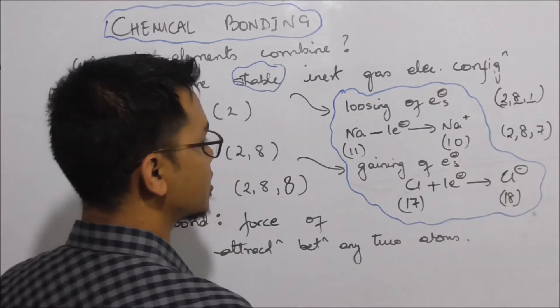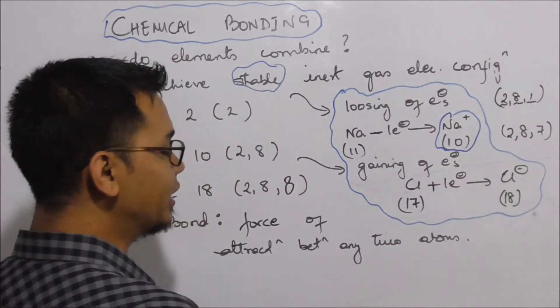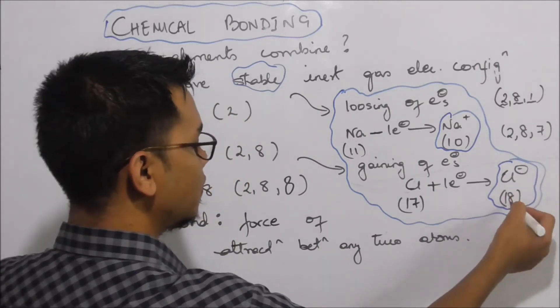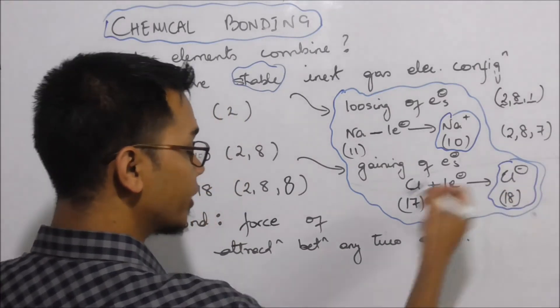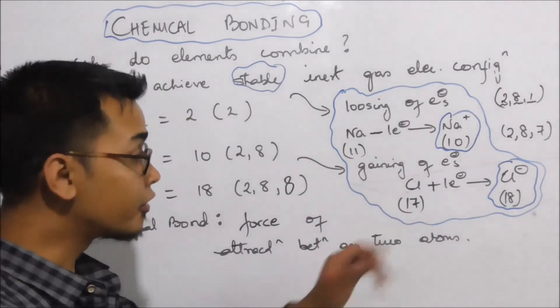The sodium cation has configuration of atomic number 10, but the chloride anion has configuration of atomic number 18. Both are stable in this form of formation.